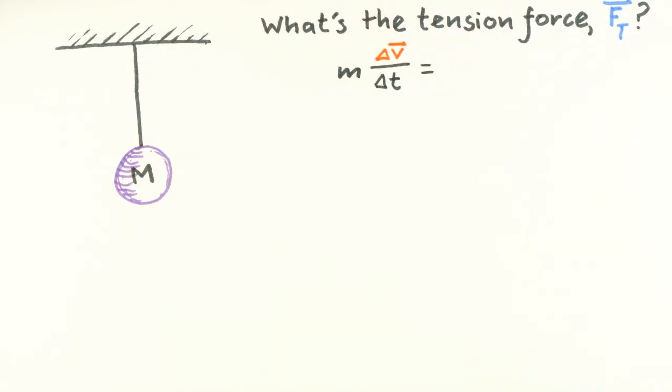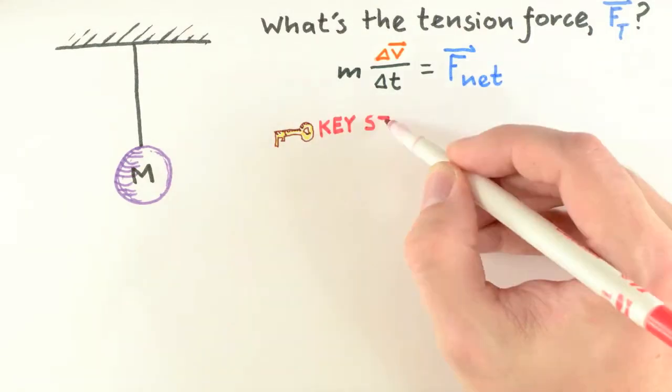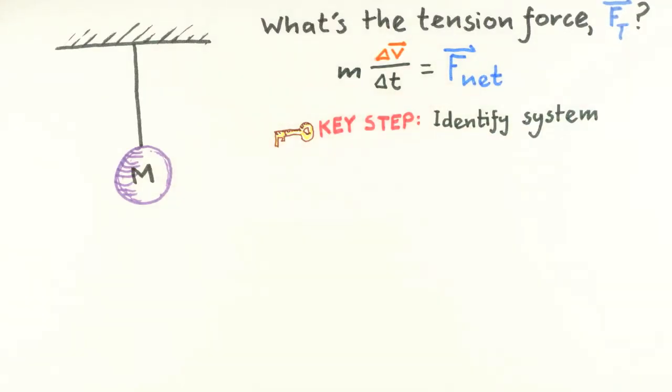As usual, we'll start with our fundamental principle, Newton's second law. To use this principle here, a key step we need to take is to identify explicitly our system. Here, the system is the hanging object. Now, for the next key step, we need to watch the motion of our system and use those observations to determine the total interactions.